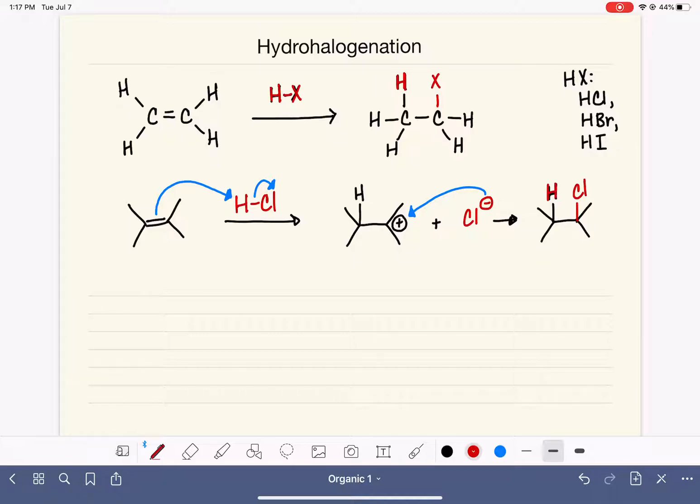There are a couple of things we need to consider when drawing the hydrohalogenation mechanism and predicting the products. One thing we need to consider is the regiochemistry. Regio is a prefix we've used before in elimination reactions. Regio is just referring to region.